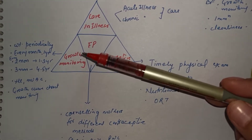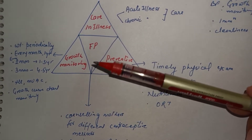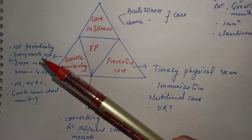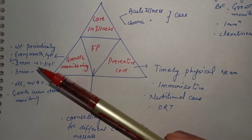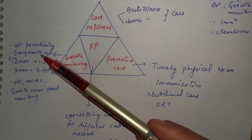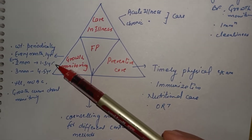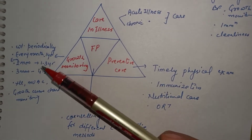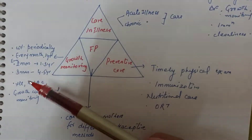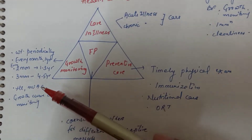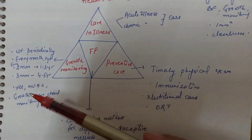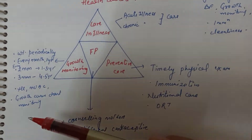Under growth monitoring, we will measure weight, height, growth chart, and mid-upper arm circumference (MUAC). Weight should be monitored periodically: for the first year, weight is checked every month; from 1 to 3 years, every 2 months; and from 4 to 5 years, every 3 months. Mid-upper arm circumference, growth chart, and height should also be monitored along with weight.